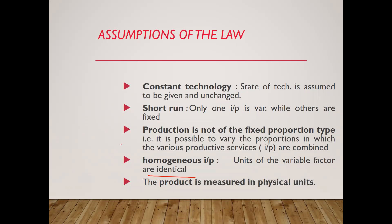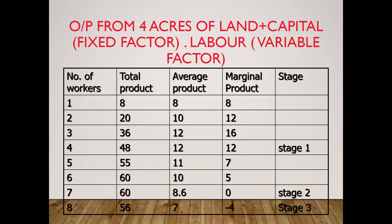Here is output from four acres of land. Land and capital are fixed factors; labor is variable. In this table, when we use 1, 2, 3, 4, 5, 7, and 8 units of labor, the total product values are 8, 20, 36, 48, 55, 60, and 56 respectively.